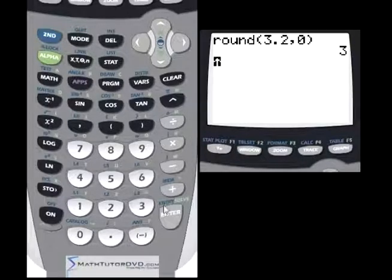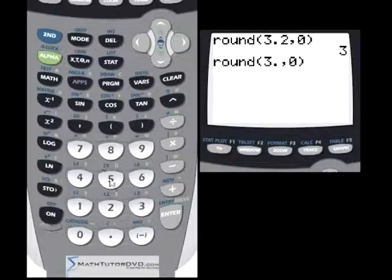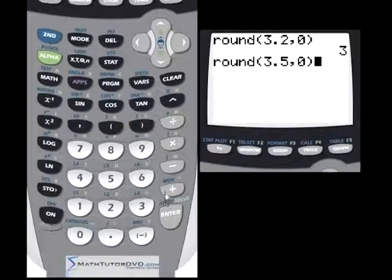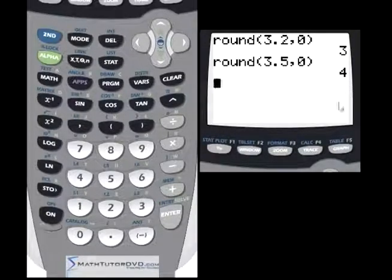Now, if we go back and pull up our last entry here, what we just typed in, and we go over here and change this to, instead of a two, we change it to 3.5. We have to put the comma zero again because we're going to round to the nearest whole number. Then you see now it rounds up to four. And of course, anything above 3.5 is also going to round up to four.